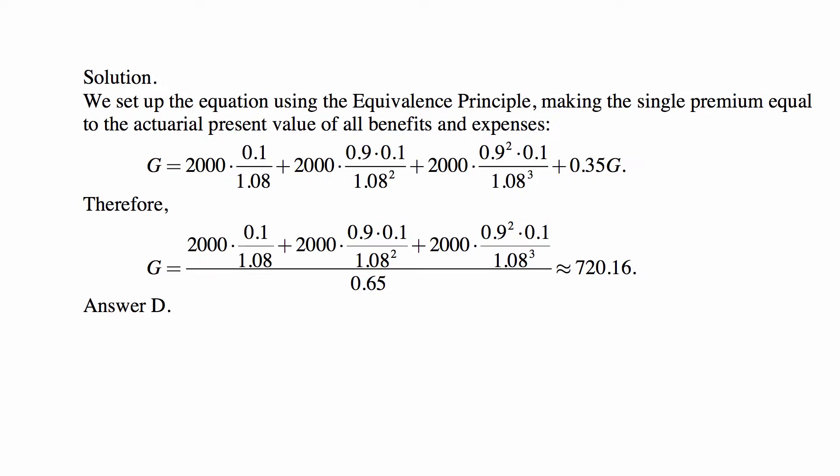Note that the probability of survival without failing is 0.9. That's why you have 0.9 in the second year term and 0.9 squared for survival through two years followed by failure in the third year. At the end we add the expenses: 35% of G, or 0.35G.